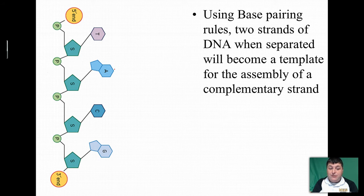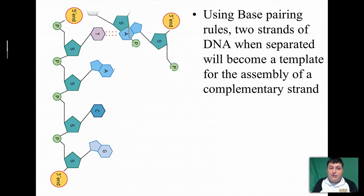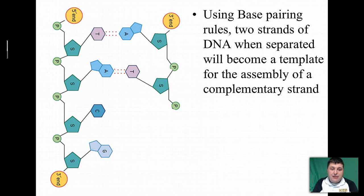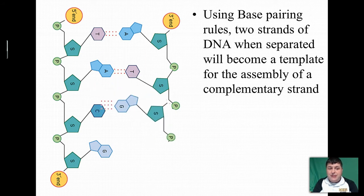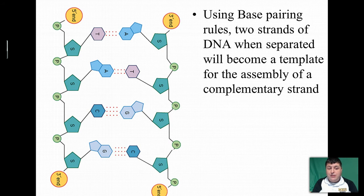Wherever there's a T, we would have an A. Wherever there's an A — adenine — we would have thymine. Wherever there's C — cytosine — we'd have a guanine. And wherever there's a G — guanine — we'd have a cytosine.